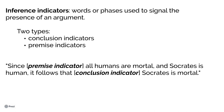An inference indicator is a word or phrase used to signal the presence of an argument. We are looking at the signals that indicate either a premise or a conclusion. In the statement 'since all humans are mortal and Socrates is human, it follows that Socrates is mortal,' the phrase 'it follows' signals our conclusion, whereas the word 'since' indicates our premise.